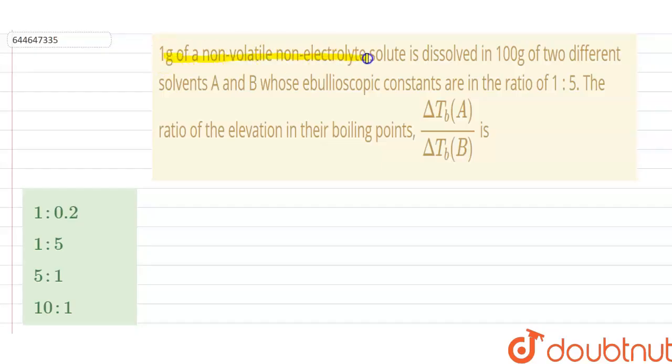gram of non-volatile non-electrolyte solute dissolved in 100 grams of two different solvents A and B whose ebullioscopic constants, indicated by Kb, are in the ratio 1:5. We have to find the ratio of their elevation in boiling points.